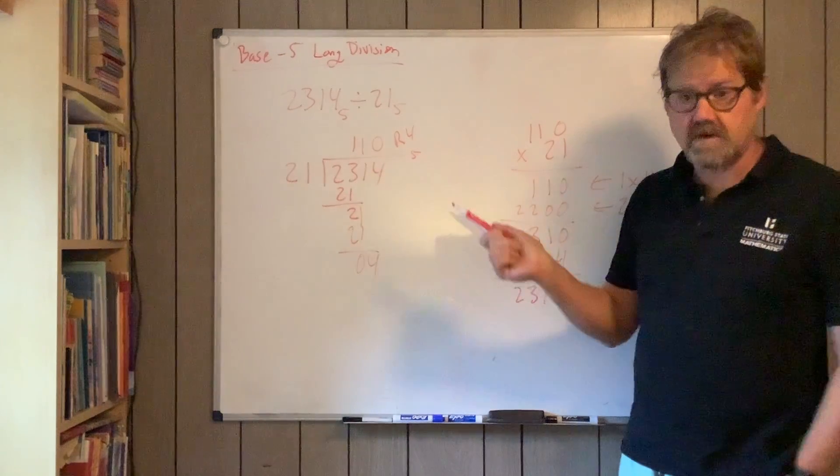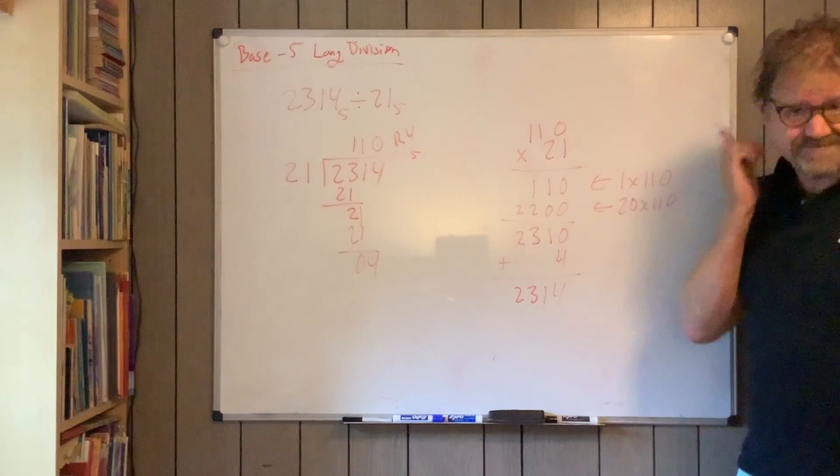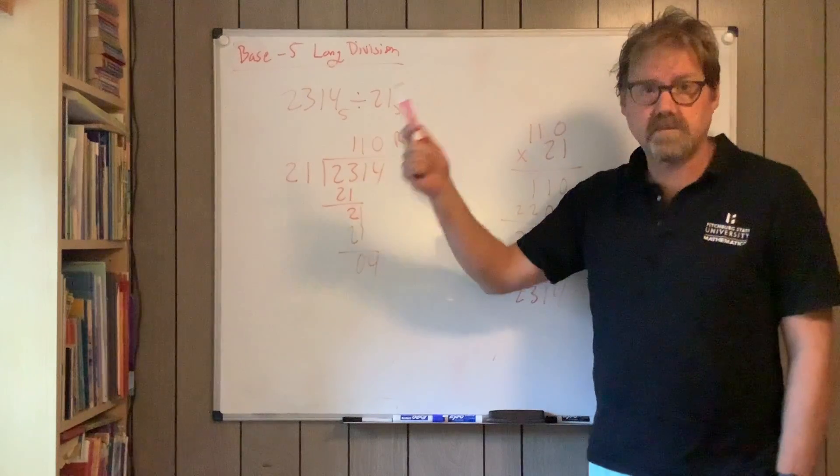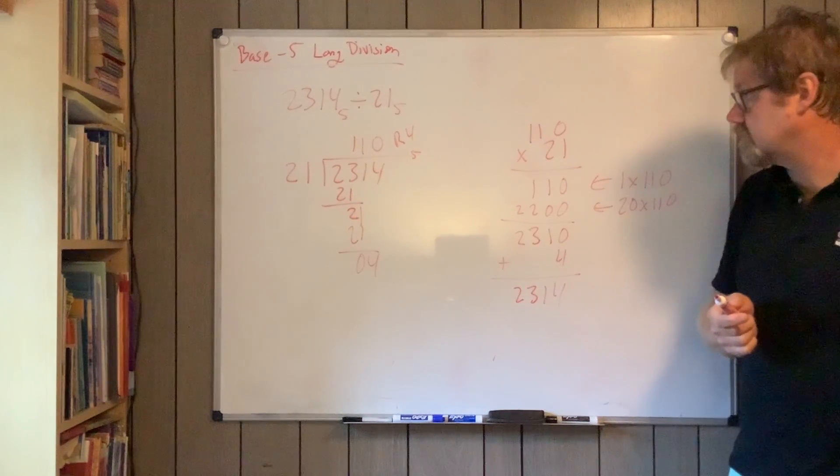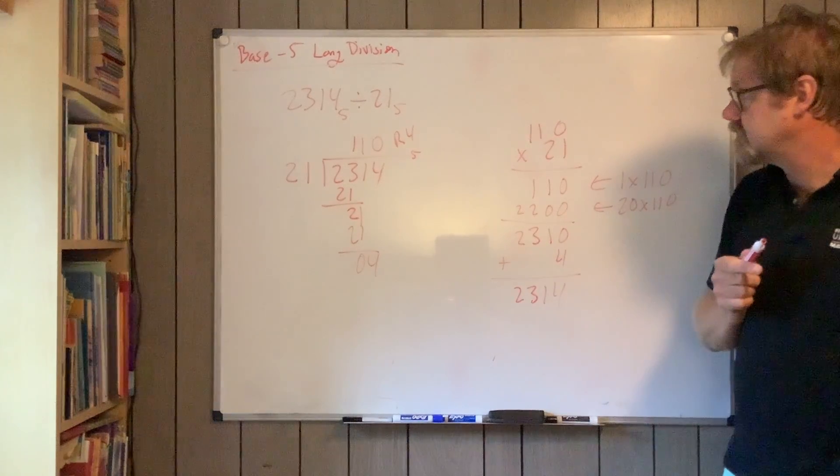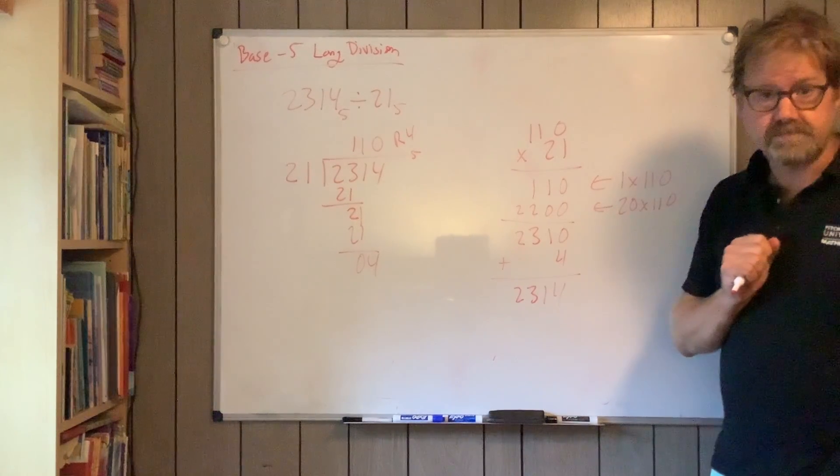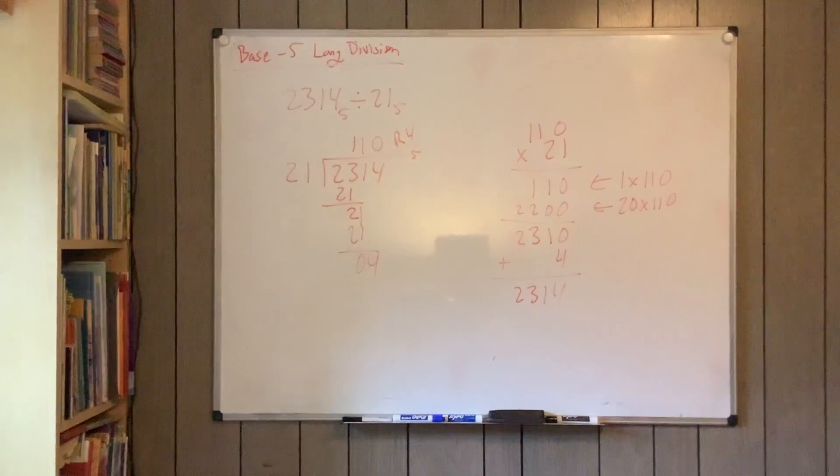Now this one was really pretty straightforward. But actually, 21 isn't probably too hard. At least multiplying by 1 and multiplying by 2 are pretty straightforward. And if we needed more, then we could have maybe written them down. Well, that finishes off base 5 long division.